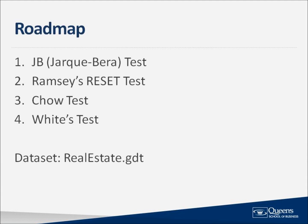The four specification tests covered in this video are as follows: the JB test of normality, the Ramsey RESET test, the Chow test for structural change, and White's test for heteroscedasticity. Each of these tests are very easy to perform in Gretl, but please make sure that you understand both the null and the alternative hypothesis of each test, as well as what you should do if your model fails one or more of the specification tests.